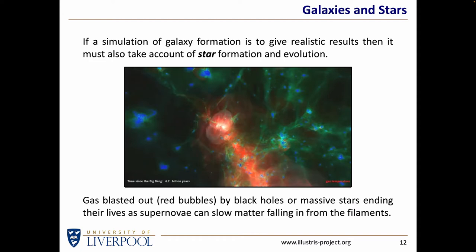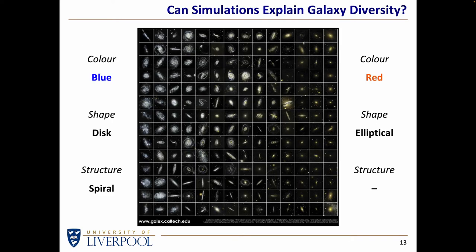So if we want a realistic simulation, it's not just matter and gravity. We have to build in the stellar astrophysics we think we understand about how stars are born, live, and die. The bottom line is: can any of these simulations explain the diversity of galaxies that we see? When we've mapped a reasonable number of galaxies, we see that they fall into various categories — some are more blue, disc-shaped, often with spiral structures, while a large number are redder and elliptical, like rugby balls. Can our simulations explain this diversity?